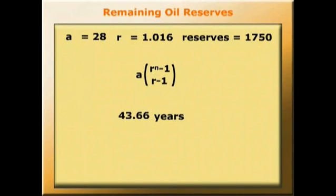So given the current stock level and the current trend rate of usage of oil, reserves will disappear in somewhere around 43 to 44 years' time. We're making great assumptions here — that the growth rate in the past will continue into the future, and that we won't discover significant new stocks of oil. What you could do, if you think these are unrealistic assumptions, is vary the assumptions, make up your own numbers, plug them in, and see what answers you get for yourself.